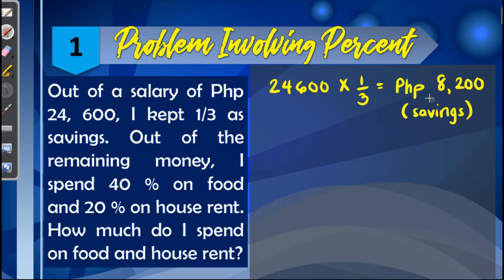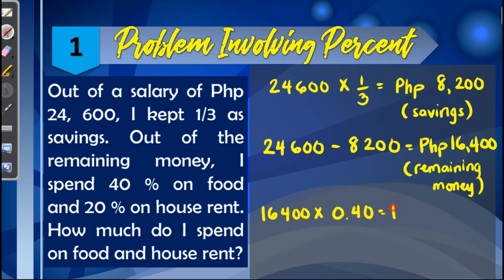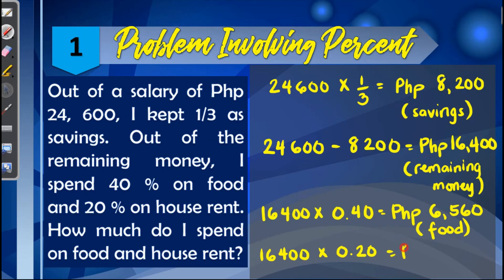Now we find the remaining value after deducting 8,200 in savings: 24,600 − 8,200 = 16,400 pesos. From this remaining money, we take 40 percent for food: 16,400 × 0.40 = 6,560 pesos for food. Then 20 percent for house rent: 16,400 × 0.20 = 3,280 pesos for house rent.